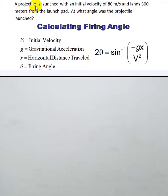Notice here at the example at the top of the page, a projectile is launched with an initial velocity of 80 meters per second and lands 300 meters from the launch pad. At what angle was the projectile launched?